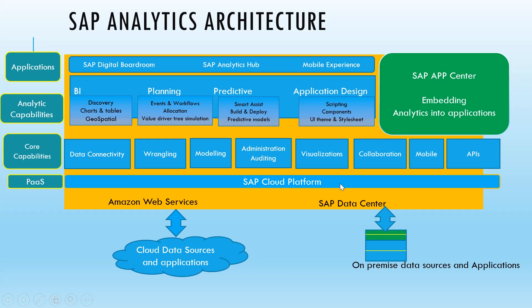The core capabilities of SAP Analytics Cloud include data connectivity, data wrangling, data modeling, administration, auditing, visualization, collaboration, mobile, and APIs. These are all the core capabilities that SAP Analytics Cloud provides.